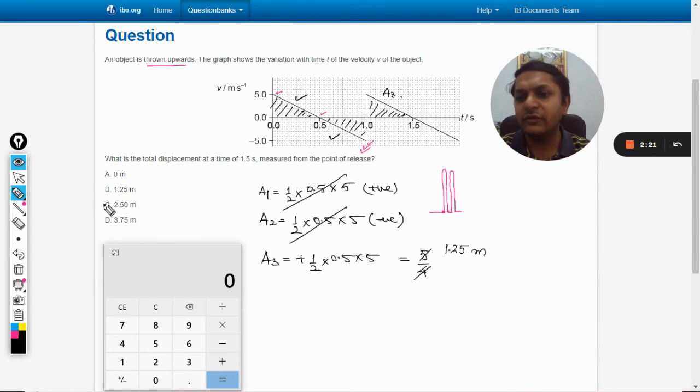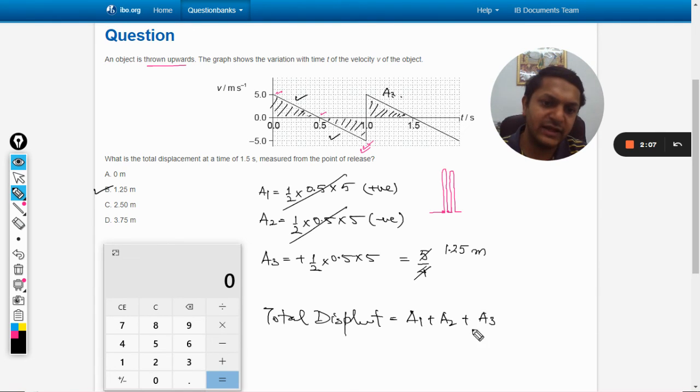So our answer is B. I hope you understand. The total displacement is given by area 1 plus area 2 plus area 3. Both of these areas cancel each other out, leaving only A₃. All the best, bye.